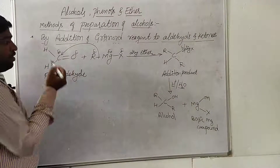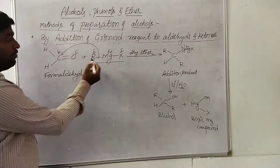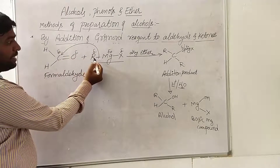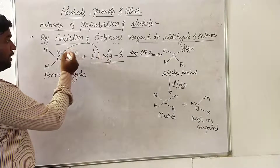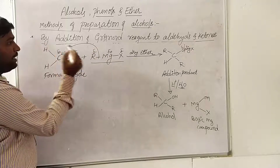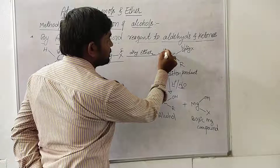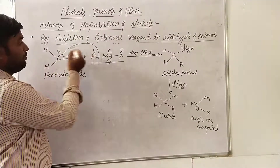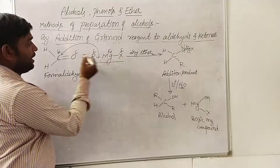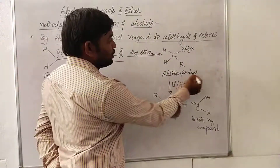For this formaldehyde, when we add Grignard reagent using the same method, we first add the alkyl group R to this carbon atom. This is because the alkyl group is electronegative in polarity and will attack the electropositive carbon. Since hydrogen is present instead of an alkyl group on the aldehyde side, the addition gives: R and H on carbon, oxygen attacked by MgX. This is called the addition product.